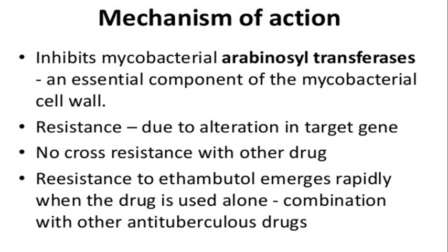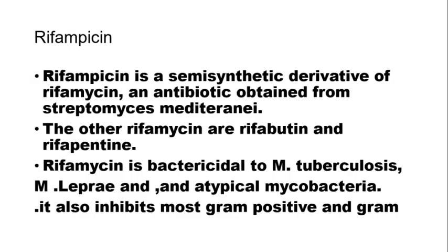To summarize: this morning's class covered INH, the first-line anti-tuberculosis drug — what tuberculosis is, how it is acquired, and the first-line drugs. Tuberculosis drugs are divided based on tuberculocidal and tuberculostatic activity. First-line drugs include INH, Rifampicin, Ethambutol, Streptomycin, and Pyrazinamide. We also covered the anti-tubercular action and mechanism of Rifampicin.